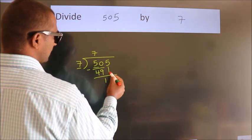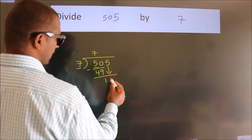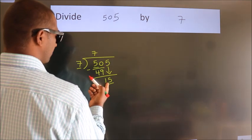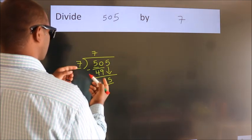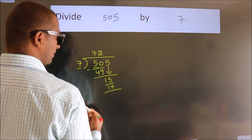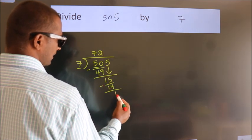After this, bring down the beside number. So 5 down. So 15. A number close to 15 in the 7 table is 7 times 2, which is 14. Now we subtract. We get 1.